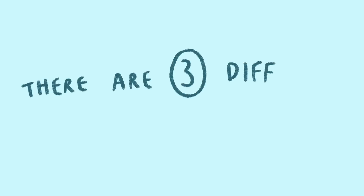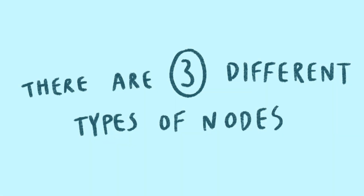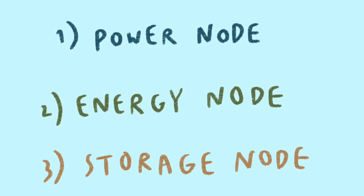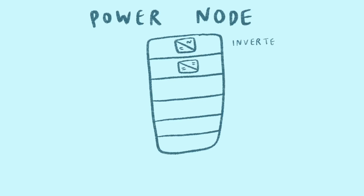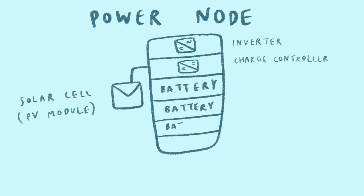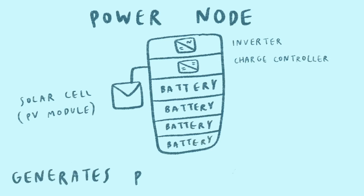There are three types of nodes in NodeX, which includes a power node, an energy node, and a storage node. The power node comes with an inverter and a charge controller, which is connected to the solar cell and batteries. It is also known as a power generator, where it generates power to villagers.